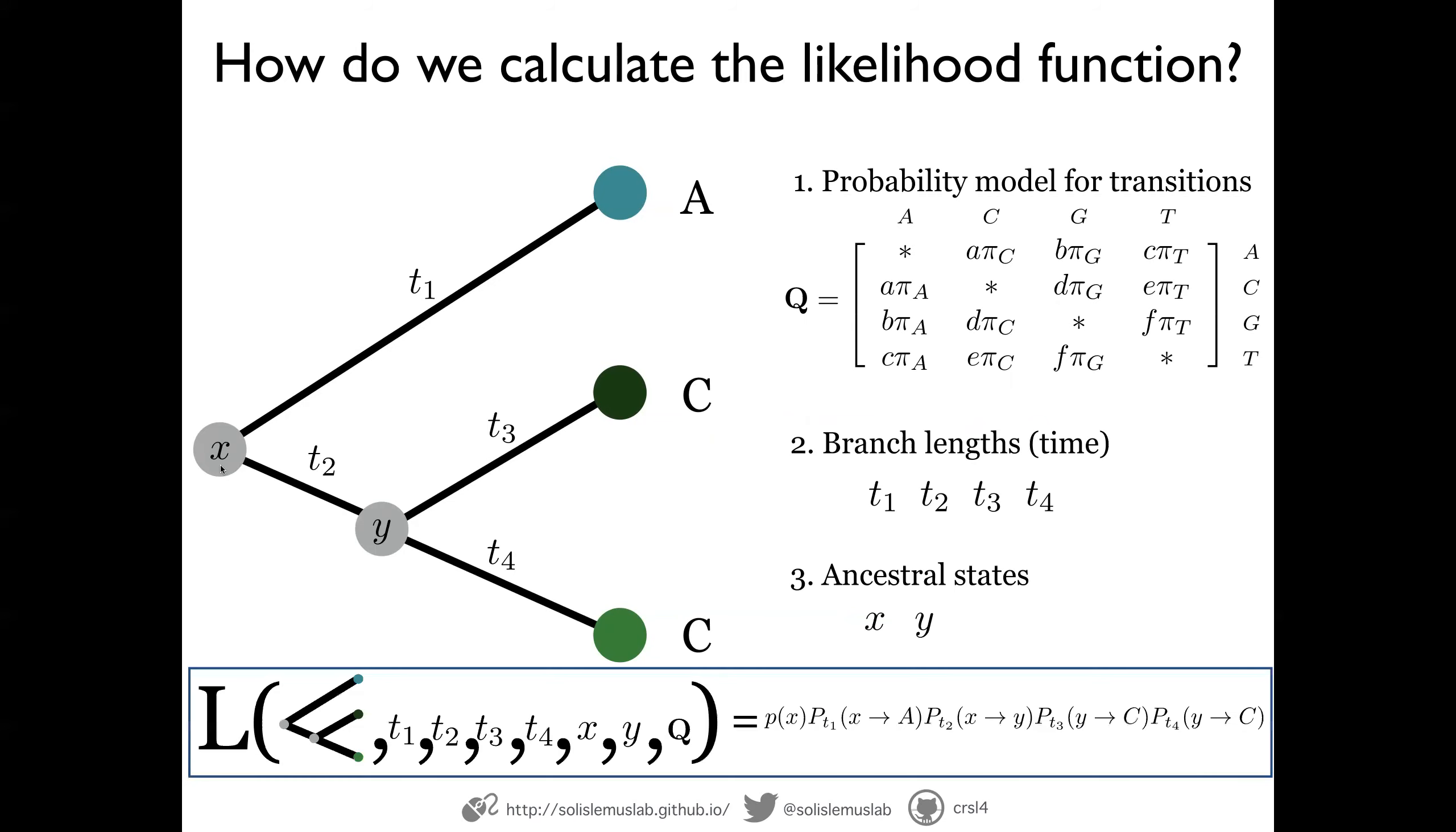With these different ingredients, we can calculate the likelihood function as a product of transition probabilities. So we have a probability of observing an x value at the root, that's p of x. And then we have a product of the transition probabilities.